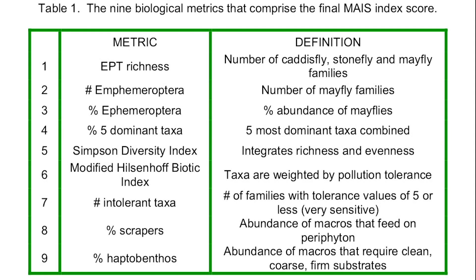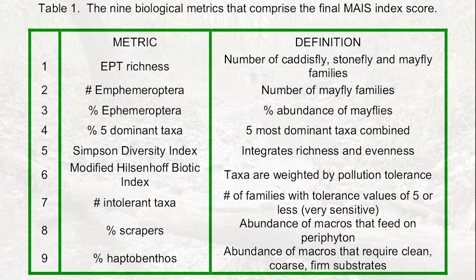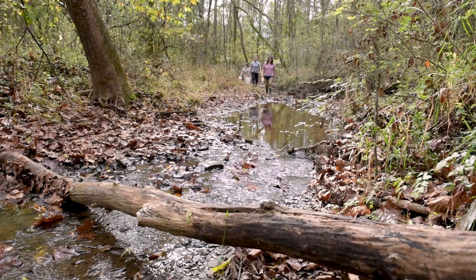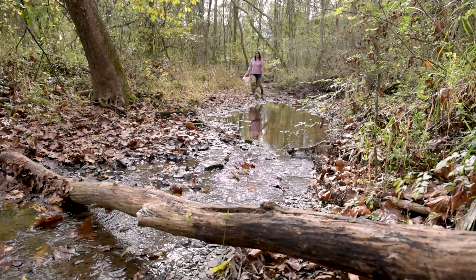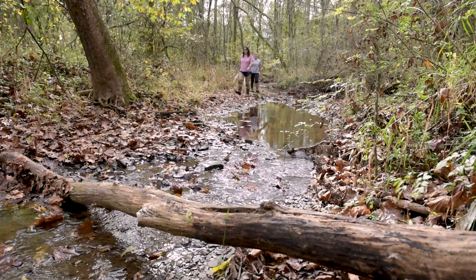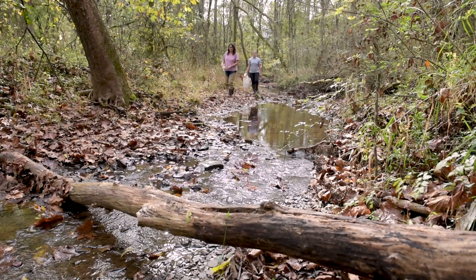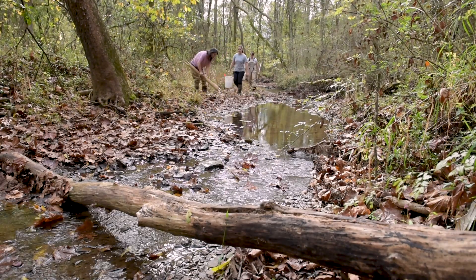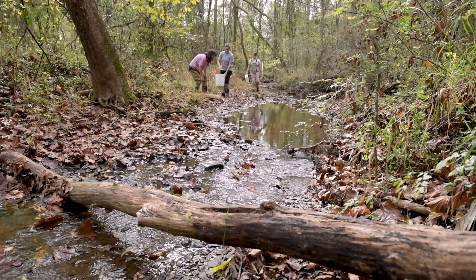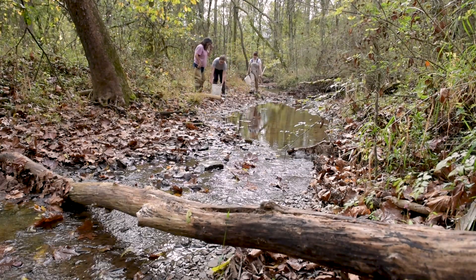We use an index called the MAIS. It stands for macroinvertebrate aggregate index for streams. The method only requires an hour or two in the field and family-level taxonomic identification of the macroinvertebrates, so it's very easy to perform.